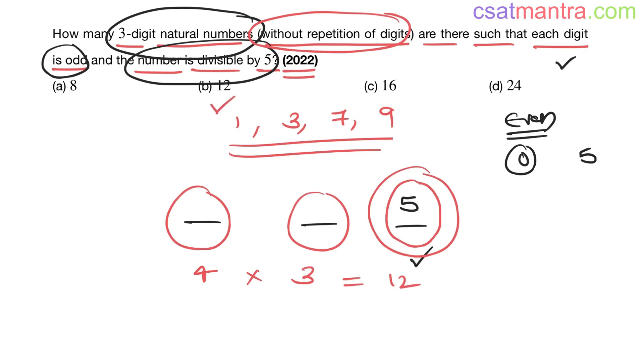When a number is divisible by 5, the last digit can be 0 or 5. 0 is an even digit we cannot have. So 5, remaining 4 digits. 4 into 3, 12.